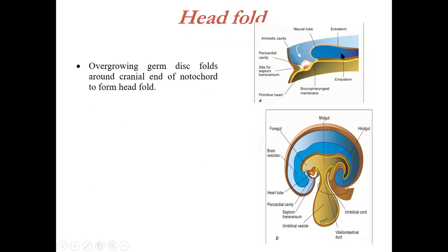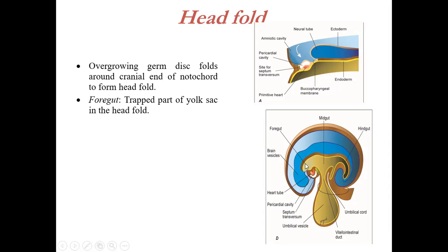The head fold forms when the overgrown germ disc folds around the cranial end of the notochord. The neural tube, which has enlarged to form the forebrain vesicle, is visible here. The disc folds around the cranial end of the notochord, so the head fold comes to lie beneath the notochord. Initially the buccopharyngeal membrane was anterior to the notochord; now it comes to lie just beneath the notochord, between the forebrain vesicle and the pericardial bulge. The foregut is the trapped part of the yolk sac within the head fold.